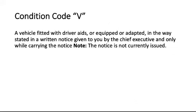Condition code V: a vehicle fitted with driver aids, or equipped or adapted in the way stated in a written notice given to you by the chief executive, and only while carrying the notice. Note: the notice is not currently issued.